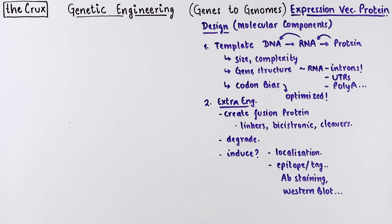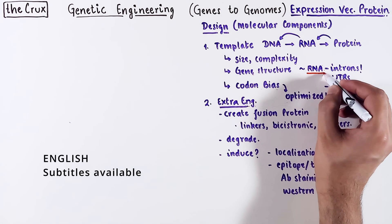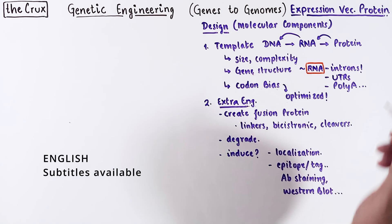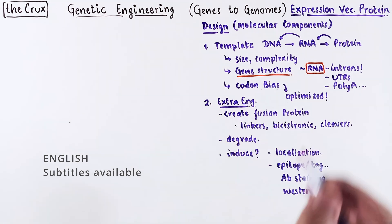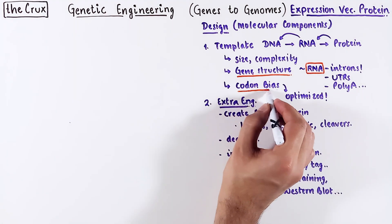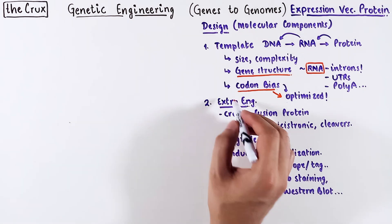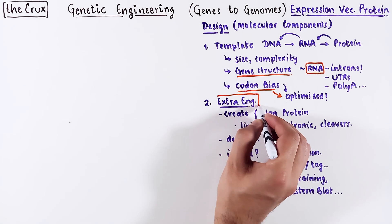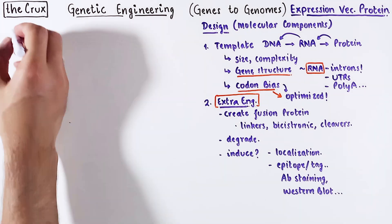Here's a summary of the molecular components of protein expression vectors from the previous video. In this video, we shall explore gene structure in RNA, its codon bias and optimization, and some common engineering involved in protein expression vectors.